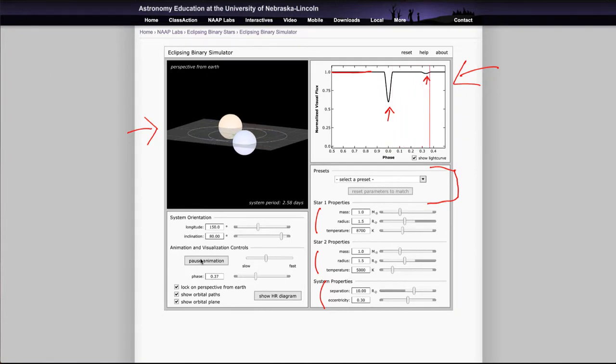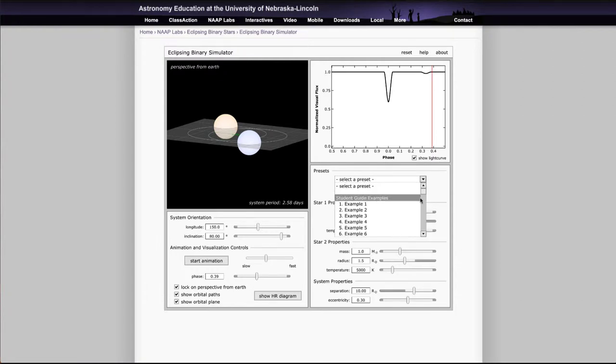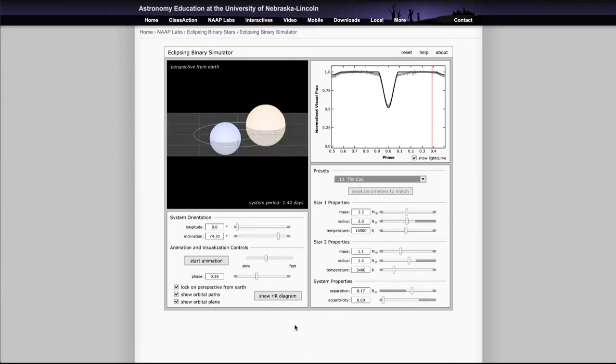Now, let's look at a couple of examples here. There are a whole bunch of presets here for you to look at. So there are some examples that you'll be asked to look at. And there are specific data sets for sample stars that exist. So we can look at one here. Let's look at TW CAS.